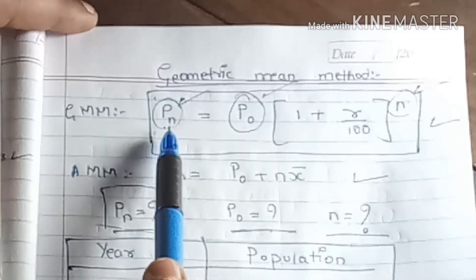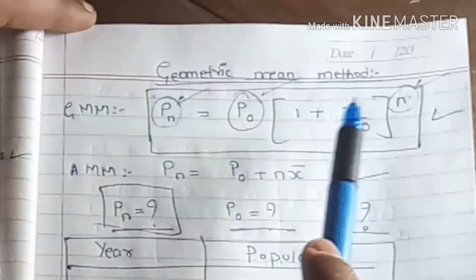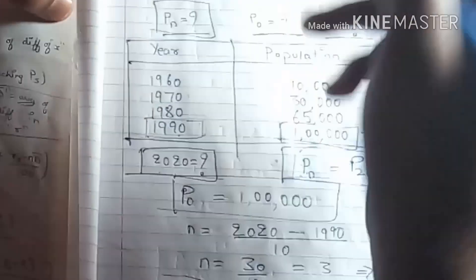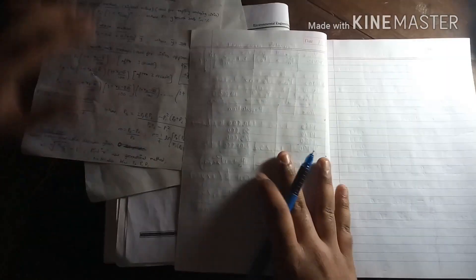Now we have Pn, P0, and N. Only R is remaining. To find R, you have to rewrite the table in a different form with columns for year, population, X, and R. X is the per decade increase in population, as explained in the earlier video on the Arithmetical Mean Method.